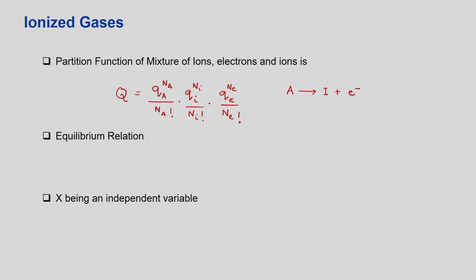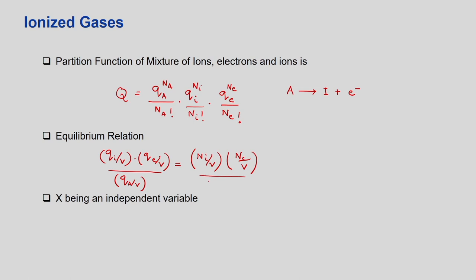We have already learned what the equilibrium constant is. I can write down the equilibrium relation in terms of partition functions: KN = (QI/V)(QE/V) / (QA/V). I can convert this to number-average concentration form. Here I, E, and A represent the ion, electron, and atom respectively.